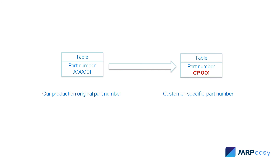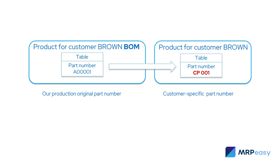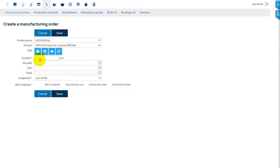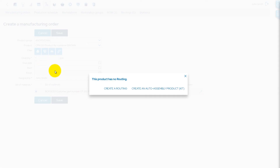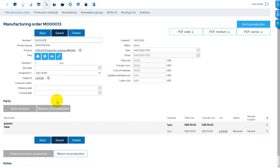Lastly, the function may also be used when you need to use customer-specific part numbers. To do that, you could create a customer-specific item that includes the product with your original part number in the bill of materials. Then the auto-assembly functionality will convert it to the customer-specific part number.